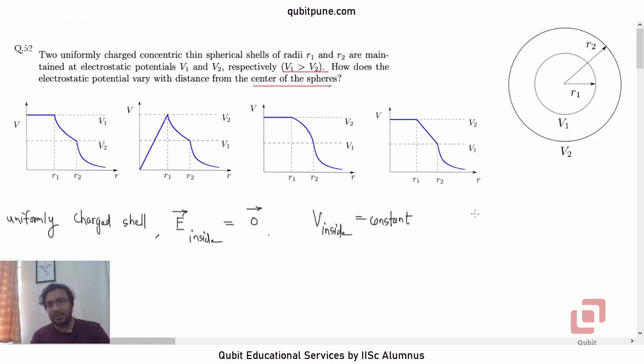So between zero to R1, the potential will be constant and it will be equal to V1. So out of the four figures here, this will not be right because here they are saying that the potential is increasing nearly from zero to V2 at R1. So this is not right.